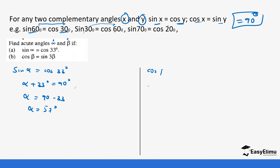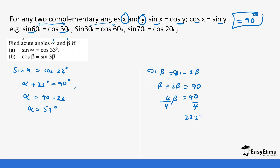For the next part, cos beta equals cos 3 beta. Since they are complementary angles, beta plus 3 beta equals 90 degrees. This gives us 4 beta equals 90.